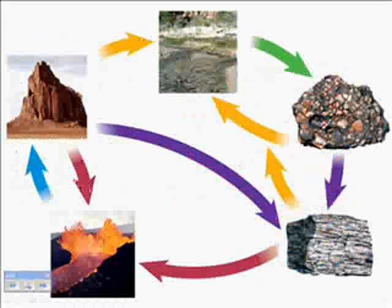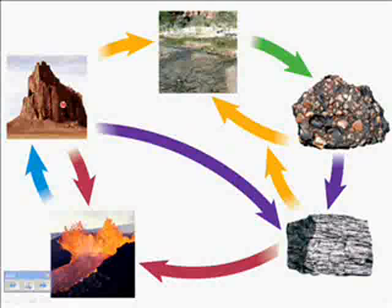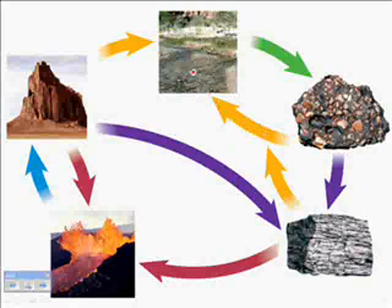Now we're going to go on to the rock cycle. We've got three main types of rocks. Igneous rock is made from magma that has hardened, and it can also melt back into magma. If igneous rock is weathered or eroded, it turns into sediment — little pieces. Those pieces can then be cemented together and compacted to become sedimentary rock. Sedimentary rock can weather and erode back to sediment, or it can undergo chemical changes caused by temperature, pressure, or reactions with other things, turning it into metamorphic rock.